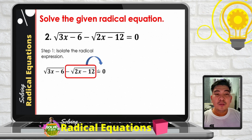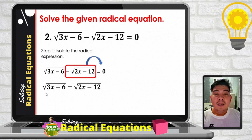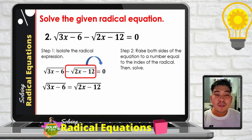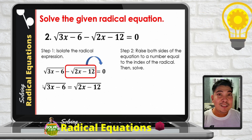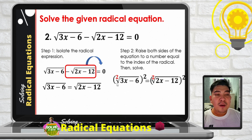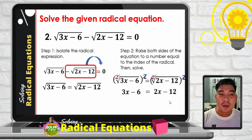Transposing the negative square root of 2x minus 12 to the right side gives us: square root of 3x minus 6 equals square root of 2x minus 12. The radical expression is now isolated. Since both indices are 2, we raise both sides by 2. The quantity square root of 3x minus 6 squared gives 3x minus 6, and the quantity square root of 2x minus 12 squared gives 2x minus 12.